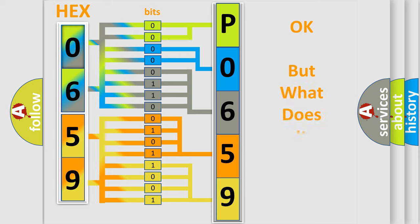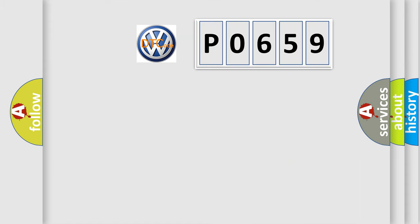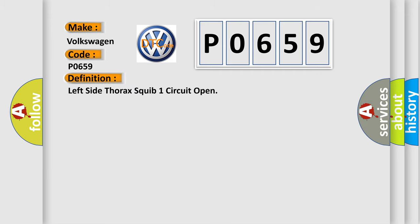We now know in what way the diagnostic tool translates the received information into a more comprehensible format. The number itself does not make sense to us if we cannot assign information about what it actually expresses. So, what does the diagnostic trouble code P0659 interpret specifically?